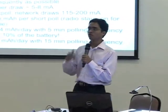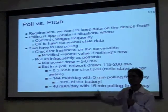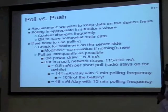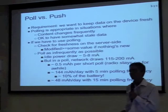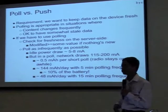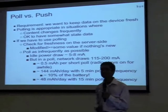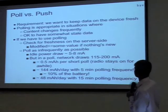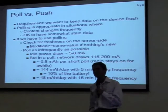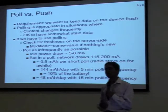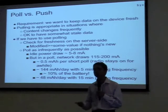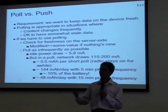The main disadvantage of running your own polling service — I have taken this data from a Google Live presentation done two years ago when C2DM was introduced — is that the idle power draw is about 5 to 8 mA when the background service is running without connecting to the server. But when it actually connects to the server every 5 minutes or so, it fetches about 144 mA per day, which is about 10% of the whole day's battery quota.